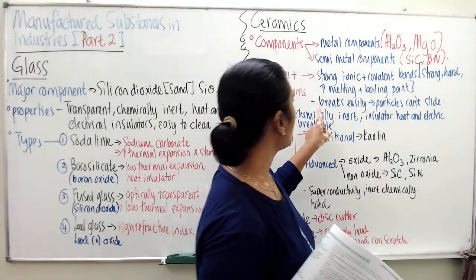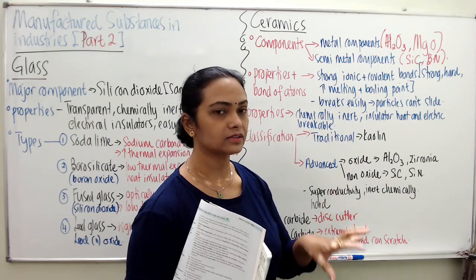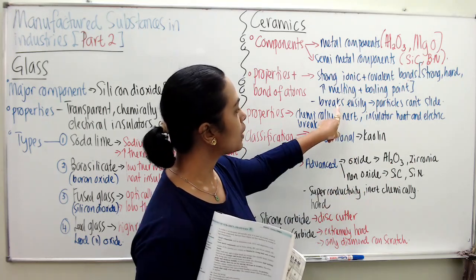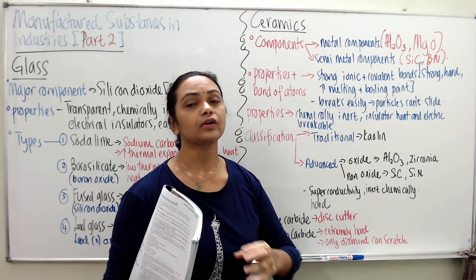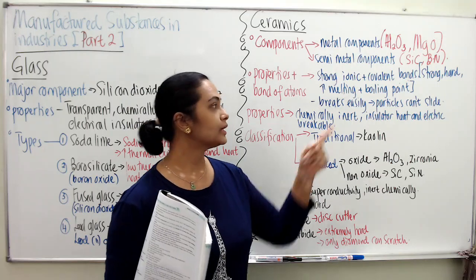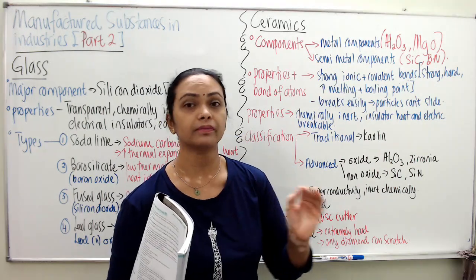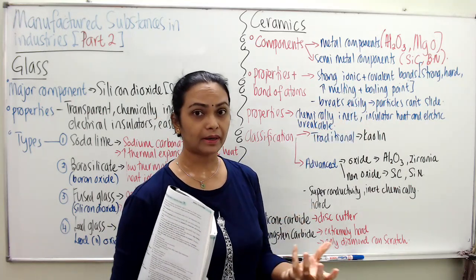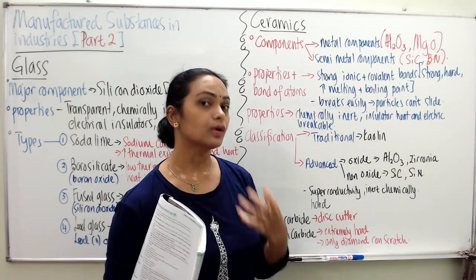However, ceramics break easily. They are hard in the sense that if you don't apply too much force, they can withstand it. But if you apply too much force, they will break easily. This is because the particles cannot slide over each other like in metals. So when you try to shape them — thinking they have semi-metal components and might be malleable — they will actually break, unlike pure metal atoms.